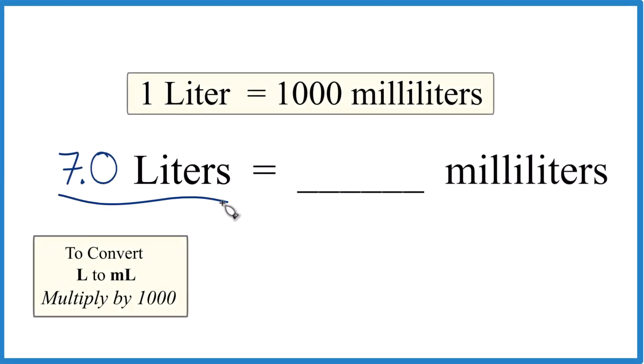So let's convert seven liters to milliliters. Here's how you do it. We know that one liter equals a thousand milliliters.